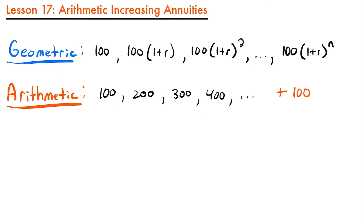In order to calculate the present value or future value of an arithmetic annuity, let's consider a simpler series of payments — a payment of one that increases by one every period. So we'd have 1, then 2, then 3, then 4, and so on. Each payment is increasing by $1 each period. This is the simplest form of an arithmetic annuity, and analyzing this series will allow us to find a nice formula we can use for other arithmetic increasing annuities.